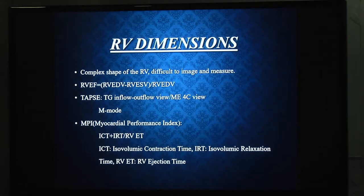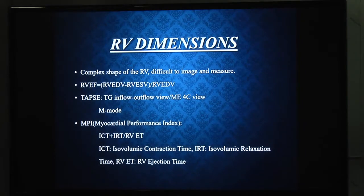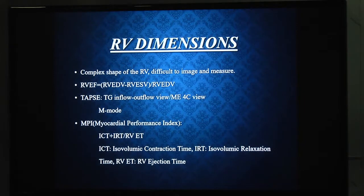RV is difficult to measure because of its complex shape and because it encircles the LV physiologically. RV EF is calculated using diastolic volume minus systolic volume divided by diastolic volume. TAPSE — tricuspid annular plane systolic excursion — is used to assess RV function. To calculate TAPSE, the transgastric inflow-outflow view is preferred because RV contracts longitudinally, and longitudinal fiber contraction is better assessed there. TAPSE can also be calculated in the four-chamber view using M-mode. The myocardial performance index (MPI) is another indicator, calculated as: (isovolumic contraction time + isovolumic relaxation time) divided by RV ejection time.